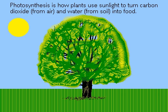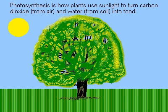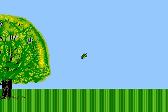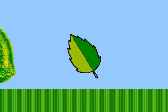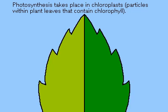Photosynthesis is the biological process in plants that uses sunlight to convert carbon dioxide from the air and water from the soil into the nutrients that provide their growth. It also provides oxygen for the atmosphere. The entire process takes place in tiny chloroplasts that exist in each plant leaf.